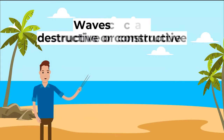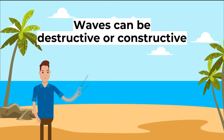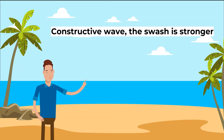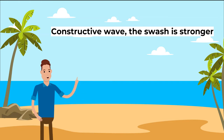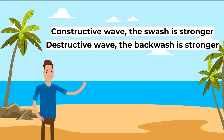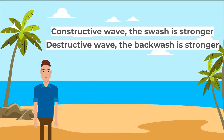Waves can be destructive or constructive. When a wave breaks, water is washed up the beach — this is called the swash. Then the water runs back down the beach — this is called the backwash. With a constructive wave, the swash is stronger than the backwash. With a destructive wave, the backwash is stronger than the swash.